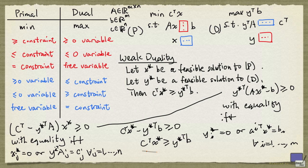But notice that these two are equal if and only if x star and y star are optimal solutions to p and d respectively. And that happens precisely when these conditions are satisfied.